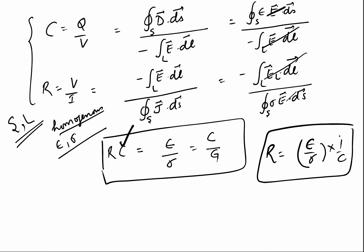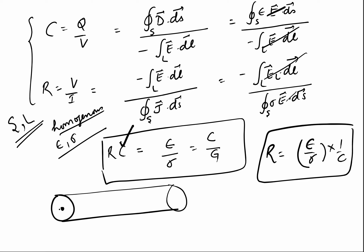For the case of a coaxial cable, with the central conductor at potential V and the outer sheath grounded, the capacitance between the central conductor and the sheath was calculated as C = 2π·epsilon / ln(b/a), where a is the inner radius and b is the outer radius.